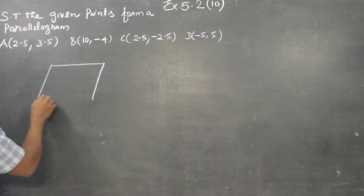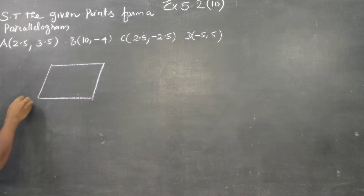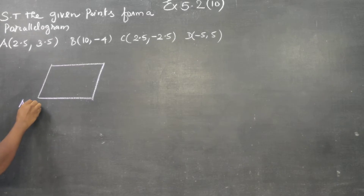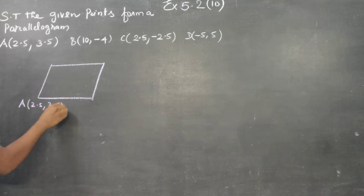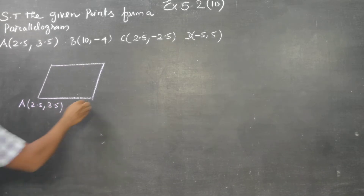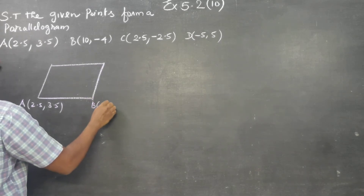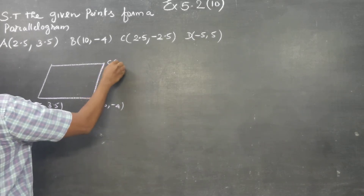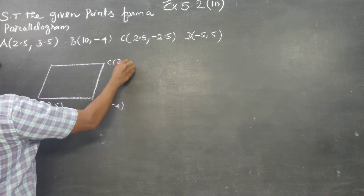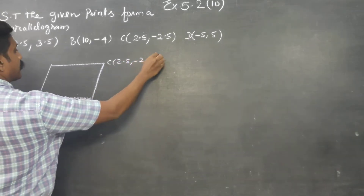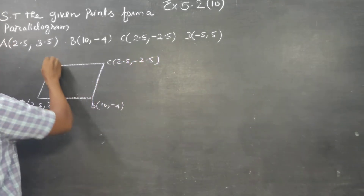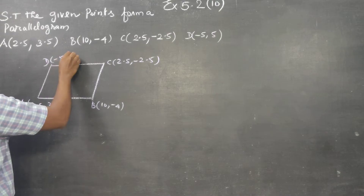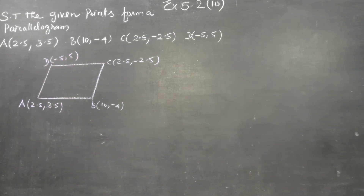I do not know whether it is a parallelogram, we have to check this. My A is 2.5 comma 3.5, my B point is 10 comma minus 4, C point is 2.5 comma minus 2.5, and D point is minus 5 comma 5. A, B, C, D.